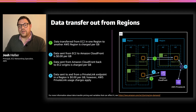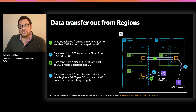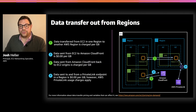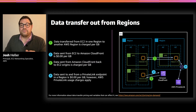AWS PrivateLink provides connectivity between VPCs and services hosted on AWS. It uses private endpoints to connect services between different accounts and VPCs. In this diagram, an EC2 instance in a given region communicates with a PrivateLink endpoint in the same region. Because the endpoint is in the same region as the EC2 instance, there isn't any inter-region data transfer charge. However, PrivateLink charges including data processing still apply. Visit the PrivateLink page to learn more about PrivateLink and its pricing model.